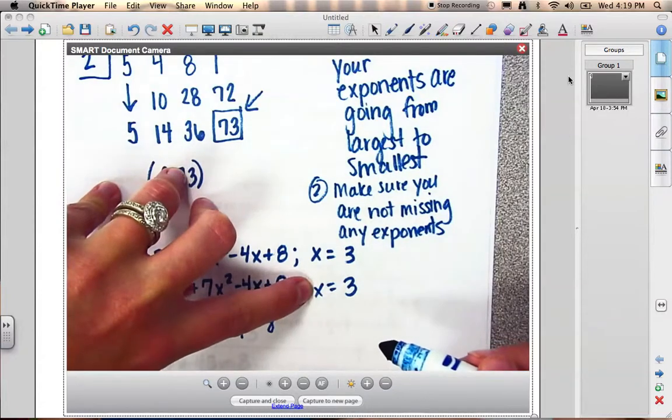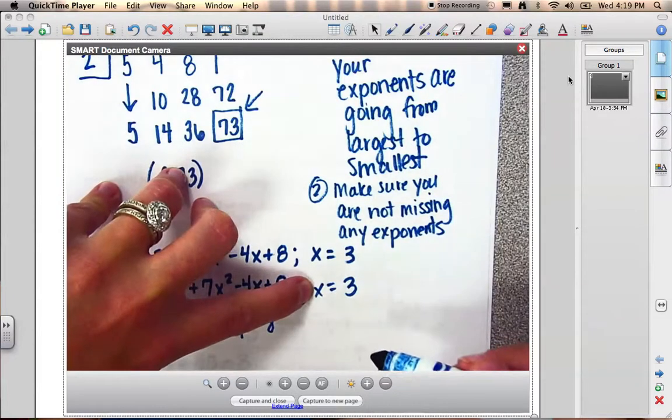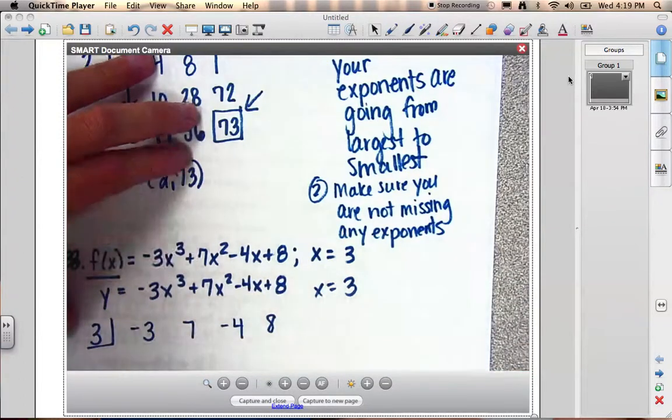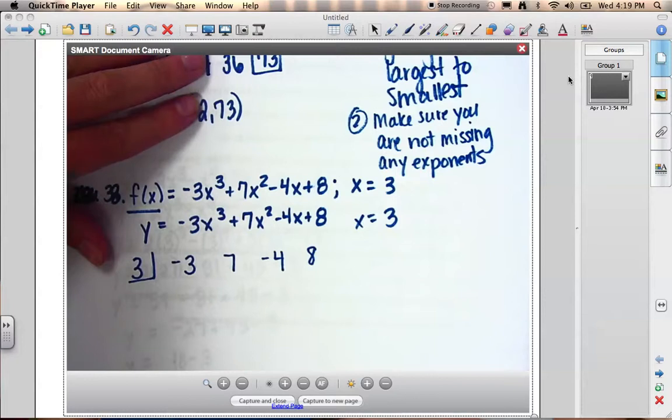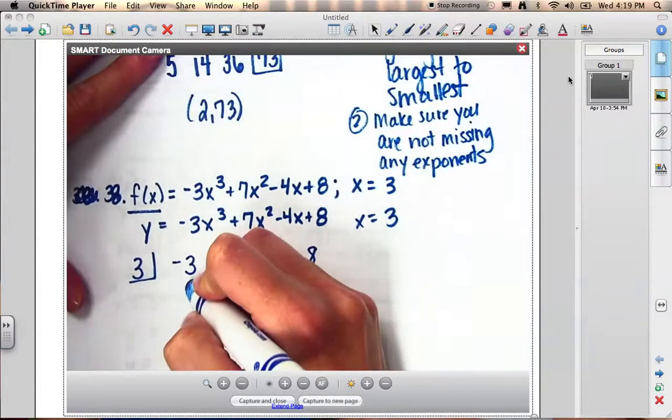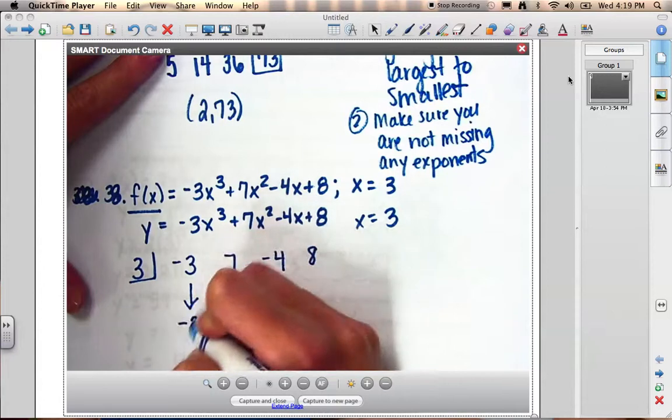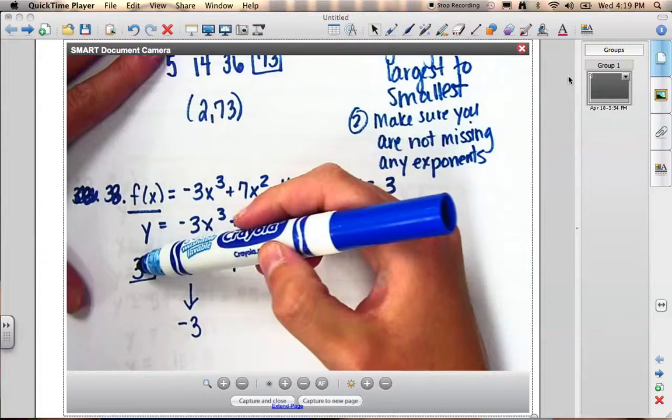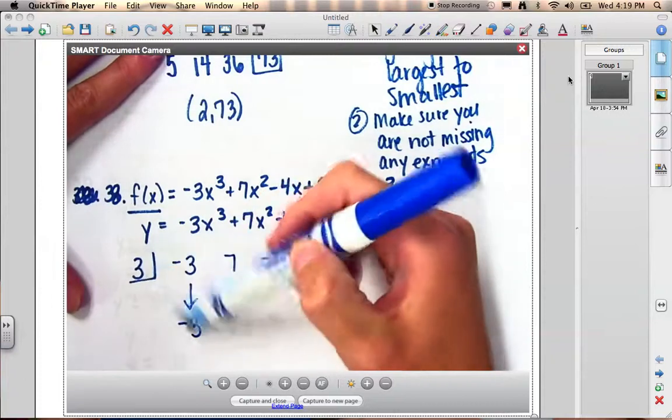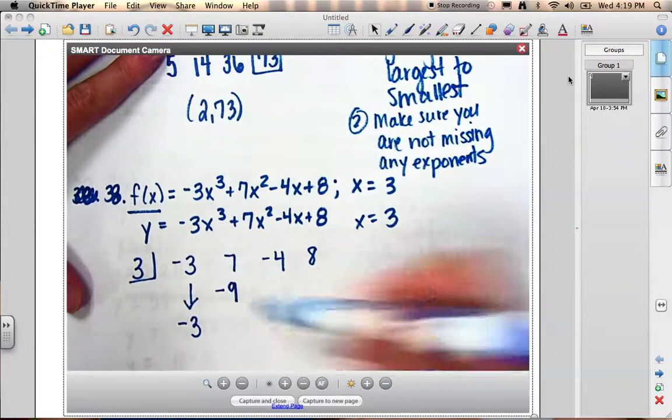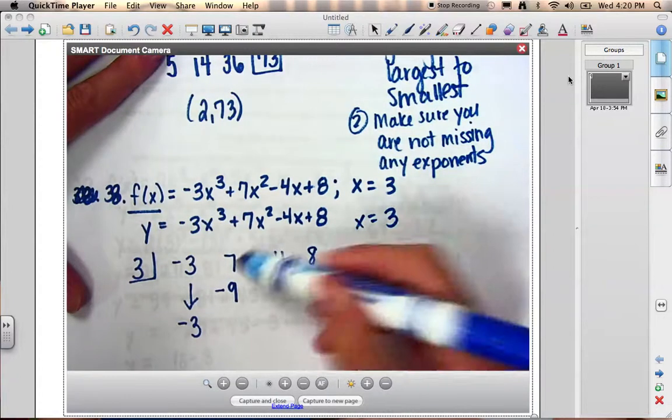What I'm evaluating at is x equals 3. So I'll put that 3 in the backwards L. After that's done, I'll start my process. I'm going to drop this first number always. And then I would take what I'm evaluating at, 3, and I'm going to multiply it to that number. So 3 times negative 3 is going to be negative 9. Then I add those two numbers.